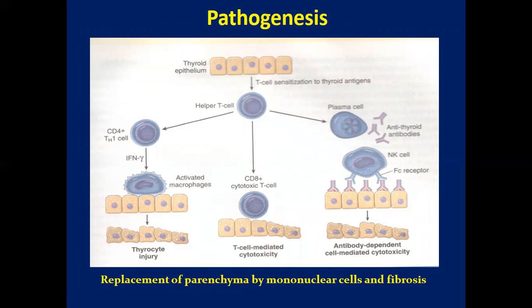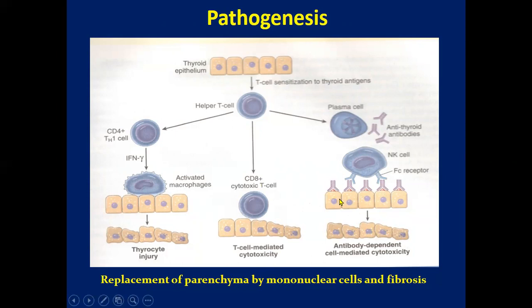Looking at the pathogenesis of Hashimoto's thyroiditis: breakdown of peripheral tolerance to thyroid autoantigens results in progressive autoimmune destruction by infiltrating cytotoxic T cells, locally released cytokines, or antibody-dependent cytotoxicity. There are three pathways: with CD4 cells, thyroiditis is driven by interferon-gamma with activated macrophages.